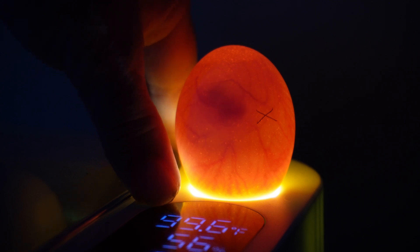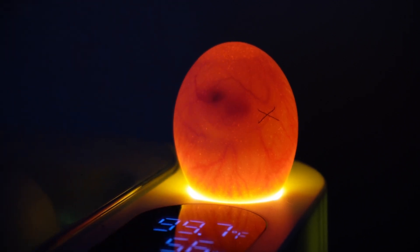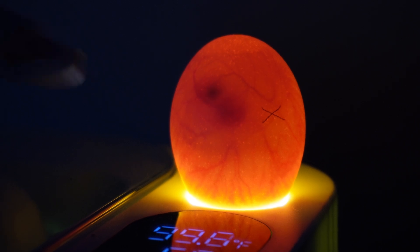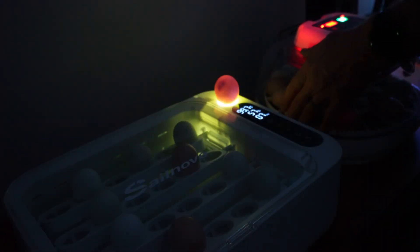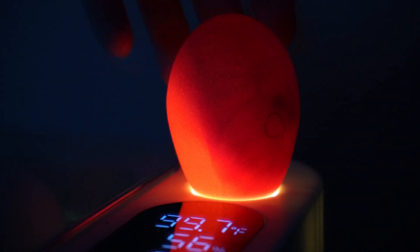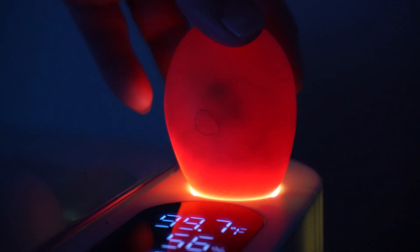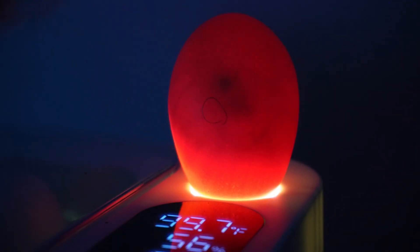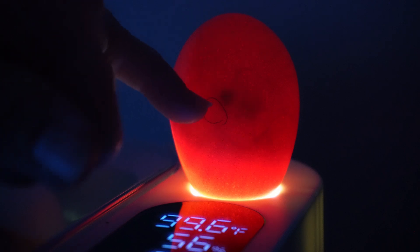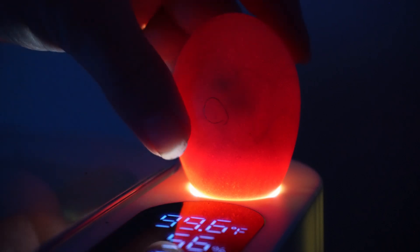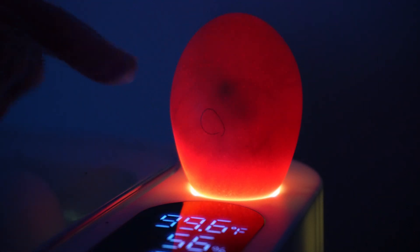This egg I wasn't sure if it was going to do anything. It's kind of big so I wasn't sure about it, but it looks like it's got a chicken. It's got a dot here. This is a darker egg, hard to see, but it's definitely got a little dot moving around in there.